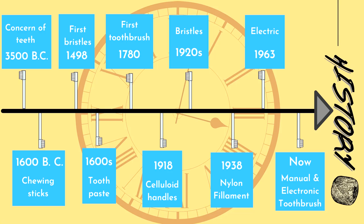The first toothbrush similar to what we use today was made in 1780. Only after 1918 did we start to have celluloid handles, followed by nylon bristles in 1920 and nylon filament in 1938. As early as 1963 we finally got the electric toothbrush, and up till now we have all sorts of toothbrushes — from the typical toothbrush to the super cool electronic toothbrush with multiple functions.